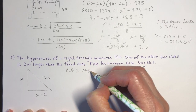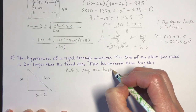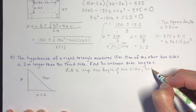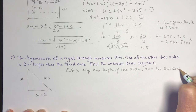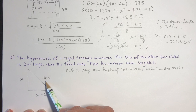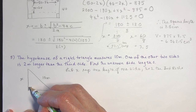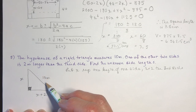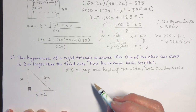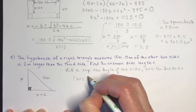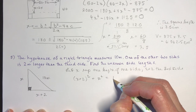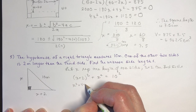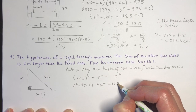Let x represent the length of one side, so x plus 2 is the third side. To set up the equation, think about right angle triangles: the Pythagorean relationship — a squared plus b squared equals c squared. So (x + 2) squared plus x squared equals the hypotenuse squared, which is 10 squared equals 100.